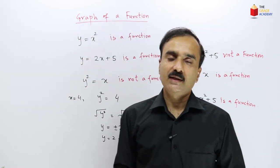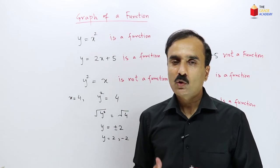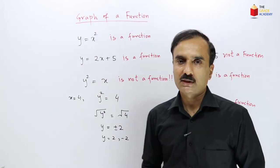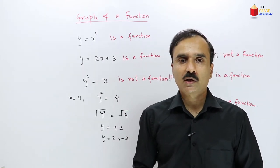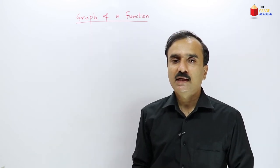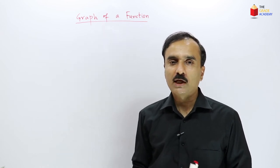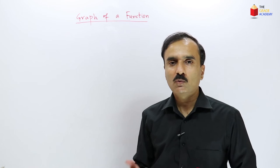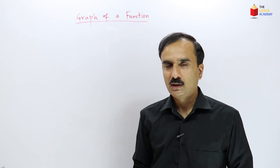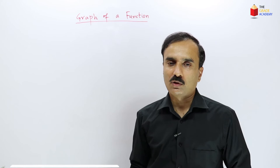So by looking at equations, we should be able to identify whether that equation represents a function or not. Now we will talk about the graph of a function. A function is always represented by some mathematical formula or equation — usually an equation between two variables x and y, i.e., between an independent and dependent variable. So the graph of the function will basically be the graph of that equation.